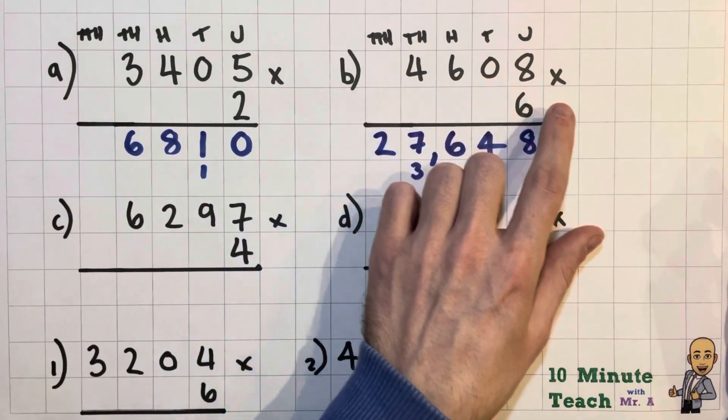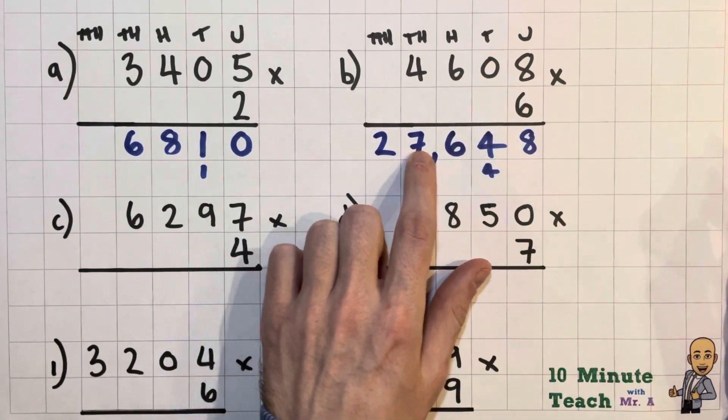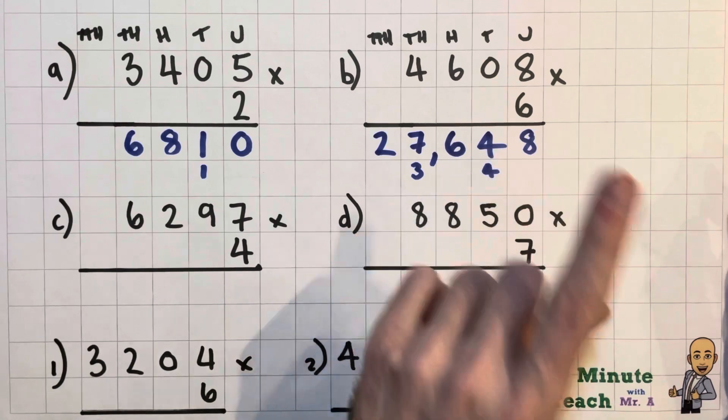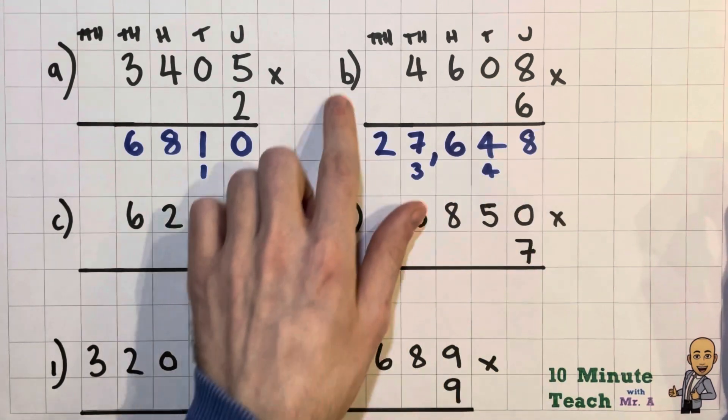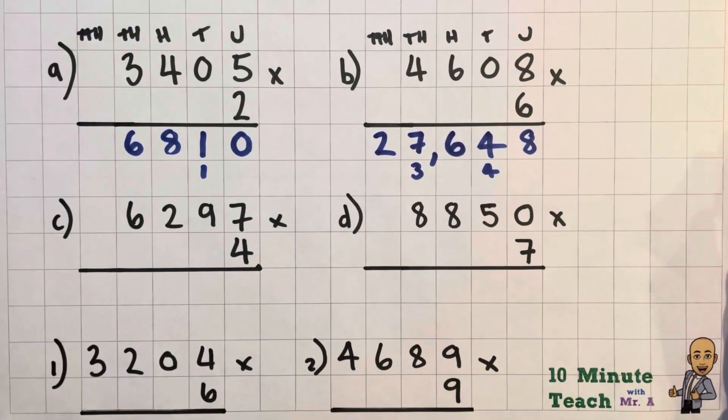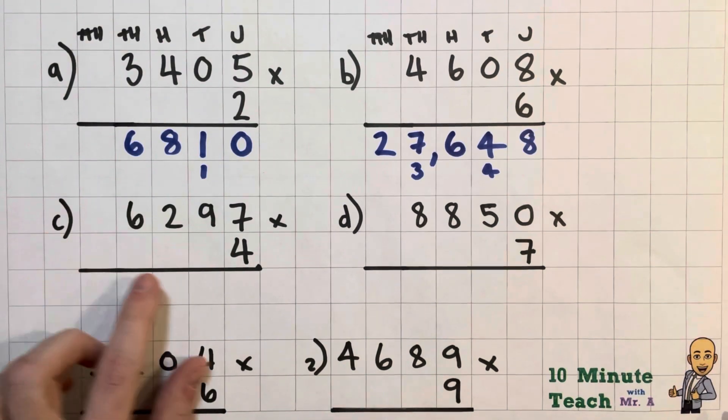So the answer to 4608 multiplied by 6 is 27,648. And I always find it helps, it's really good practice to say those numbers every time you get the answer as well. Okay, so let's have a little look at C.